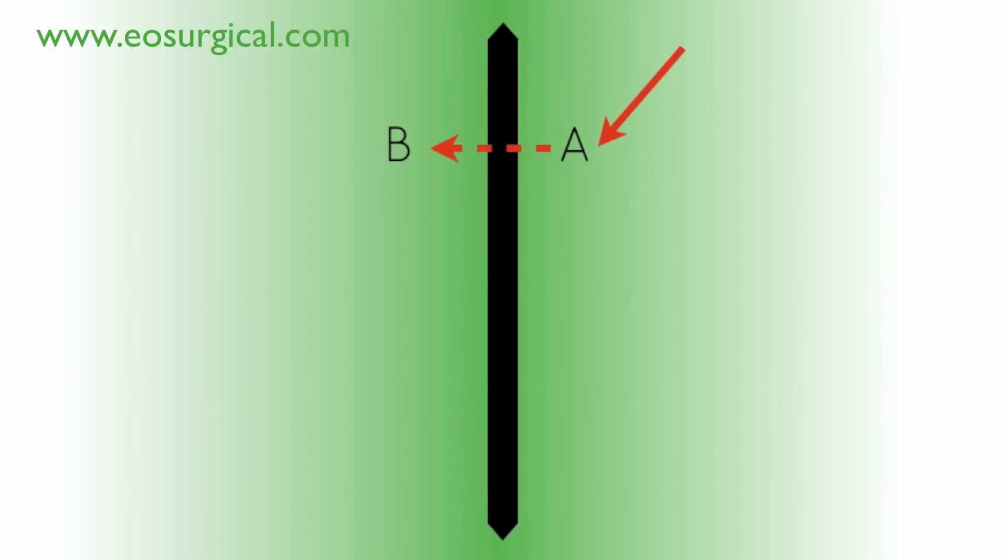The suture enters at A and exits at B, passes back into the tissue at C before exiting at D. A and D are tied together. This forms a horizontal mattress suture.